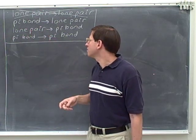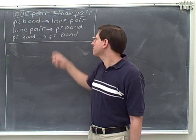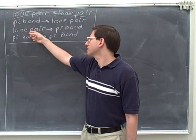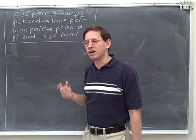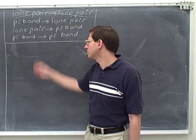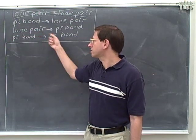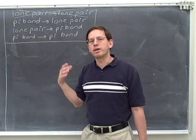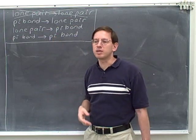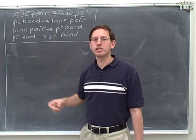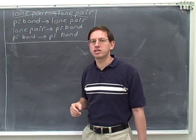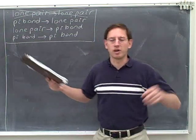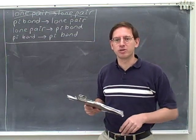If you're taking a lone pair and making it into a pi bond, you have to make that new pi bond as close as possible to the original lone pair. Or, if we take a pi bond and convert it into a different pi bond, the new pi bond has to be as close as possible to the original pi bond. You can see why we might call this the 'as close as possible' principle.